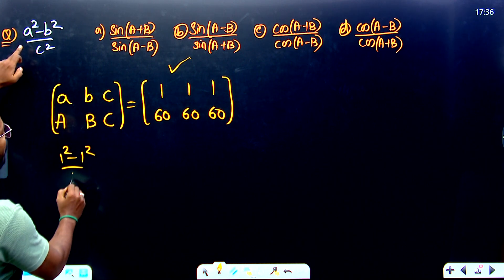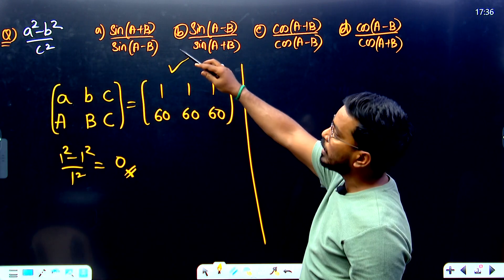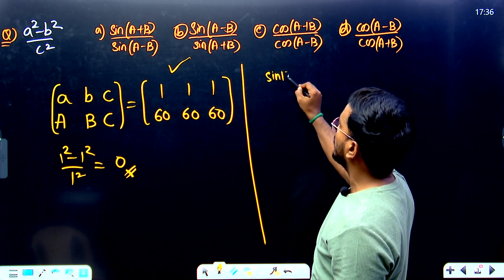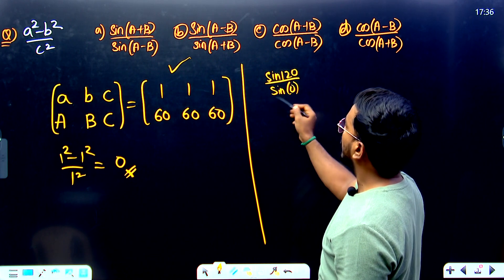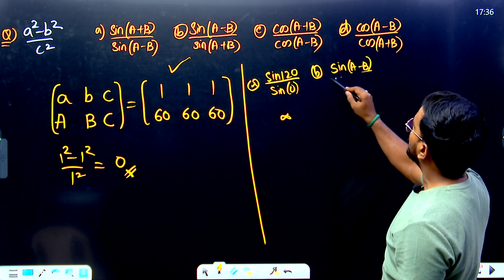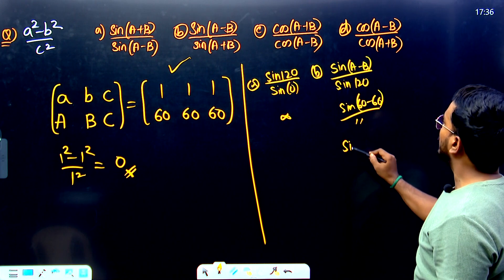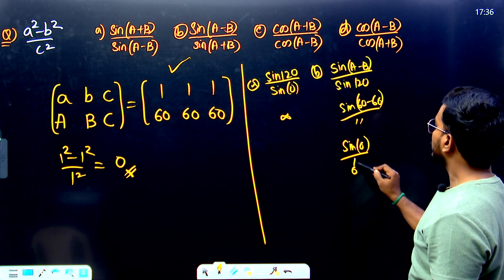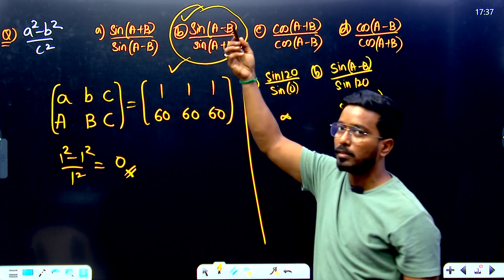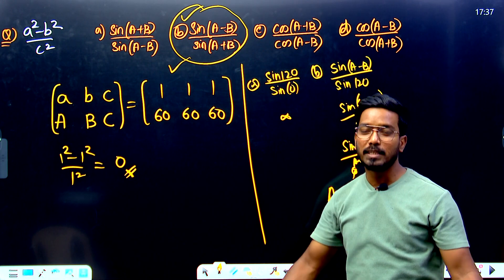With sides 1, 1, 1: a² minus b² divided by c² becomes 1² minus 1² divided by 1² which is 0. Now check which option gives 0. Option A: sin(a+b) = sin(120°) divided by sin(0°) — sin(0°) is undefined, so no. Option B: sin(a−b) = sin(60°−60°) = sin(0°) = 0, divided by anything — that gives 0. So option B is the correct answer.